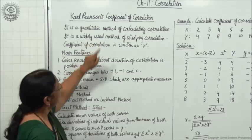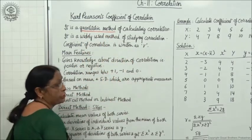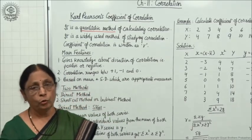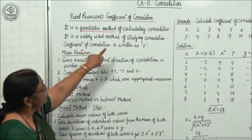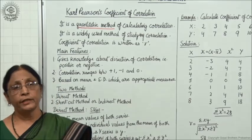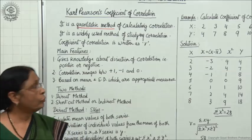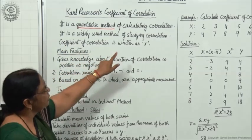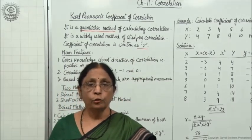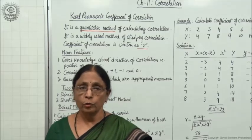It is a quantitative method of calculating correlation. It gives you the quantitative measurement of correlation. It is a widely used method of studying correlation because it gives you the proper exact value of correlation. The coefficient of correlation is written as 'r' — this is the symbol used for indicating coefficient of correlation.